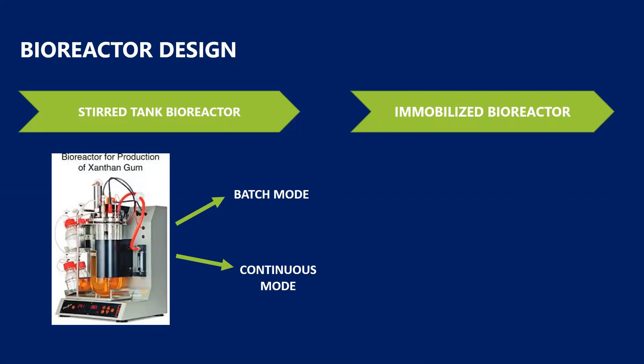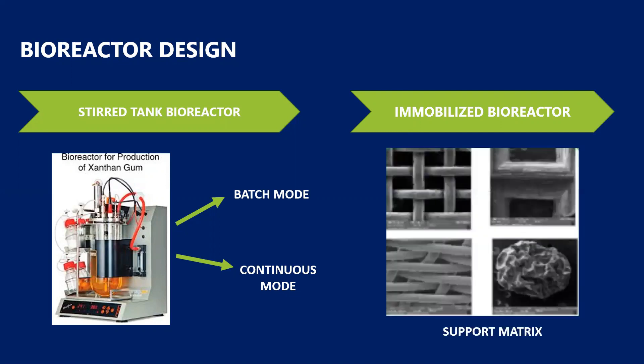The next one is the immobilized bioreactor. This has come into importance just lately. Basically on different support matrices the cells are immobilized and utilized. What are the advantages? You get higher surface area, it's better for production. But the drawback is that the xanthan produced gets clogged inside and thus the extraction of xanthan out of the medium becomes more tedious and the process becomes expensive. Thus it is not that much used, but research is going on in this particular area.